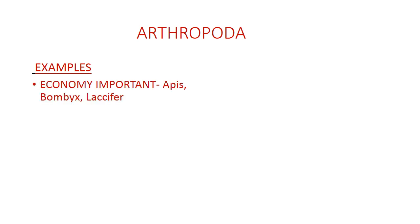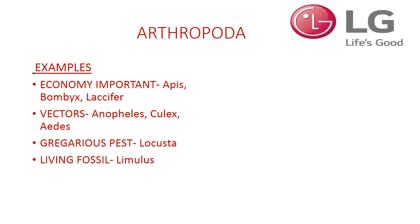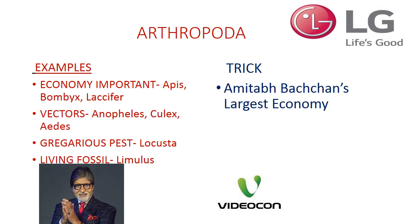The next is Arthropoda, the largest phylum. NCERT examples are divided by function. Economically important: Apis, Bombyx, Laccifer. Vectors: Anopheles, Culex, Aedes. Then Locusta (Gregarious Pest) and Limulus (Living Fossil). To remember these, just think of two companies — LG and Videocon — and the famous personality Amitabh Bachchan. First trick: 'Amitabh Bachchan's Largest Economy' — from 'Amitabh' it's Apis, from 'Bachchan's' it's Bombyx, from 'Largest' it's Laccifer, and 'Economy' is the function.